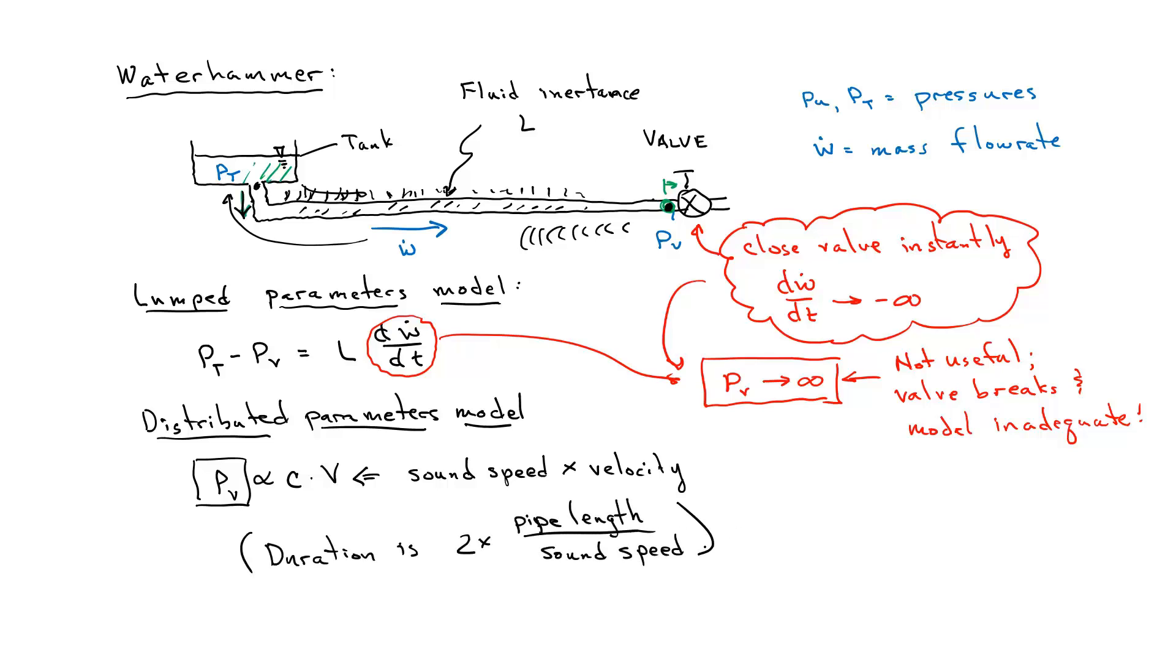The time to get a signal from the valve to the tank is just the length of the pipe divided by the sound speed. Now this can be used for design. It's a useful number.